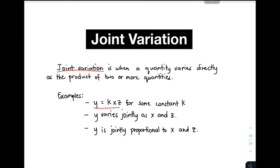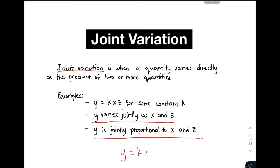What you'll encounter in joint variation is y is equal to kxz for some constant k, where the variables are y, x, and z. The frequent phrases you'll encounter are: 'y varies jointly as x and z,' or 'y is jointly proportional to x and z,' and all of that is directly translated to y is equal to kxz. In the next part of our video, I will give examples where we will solve problems about joint variation.